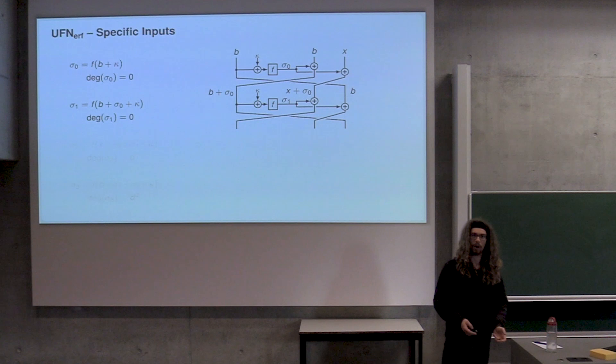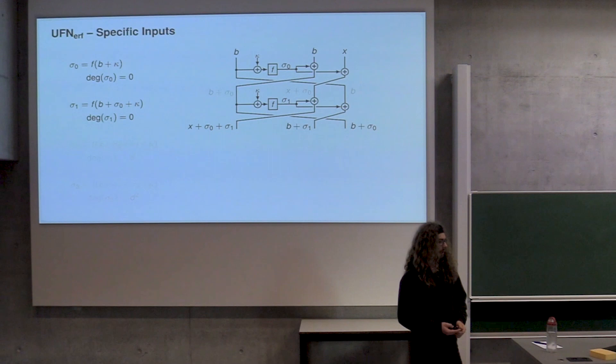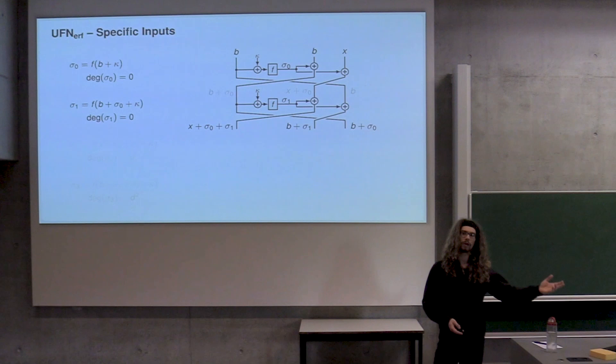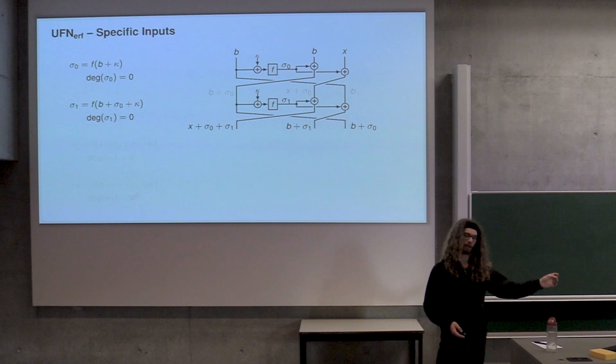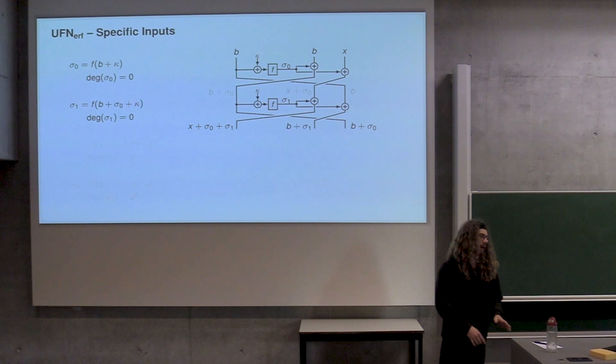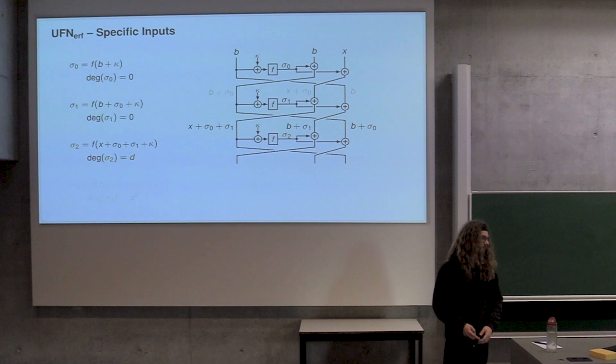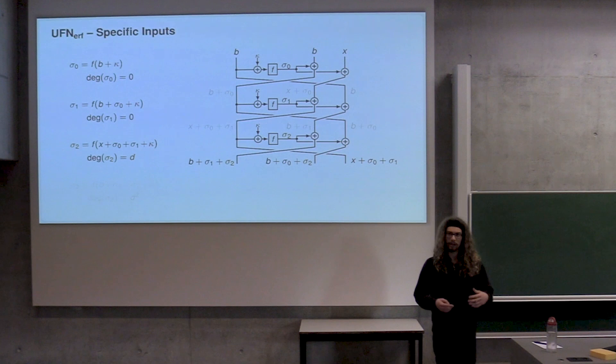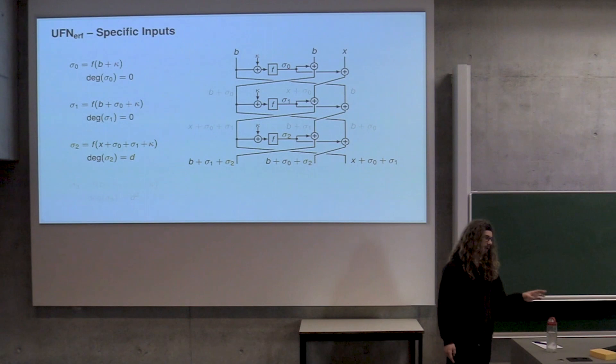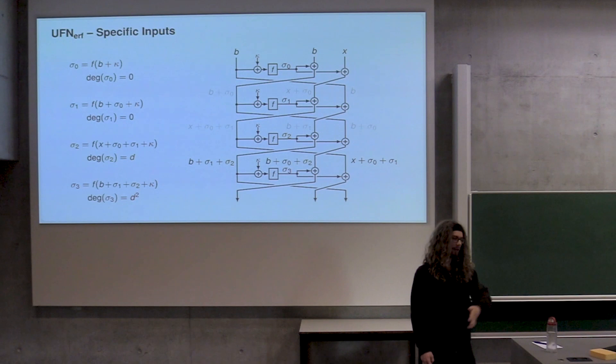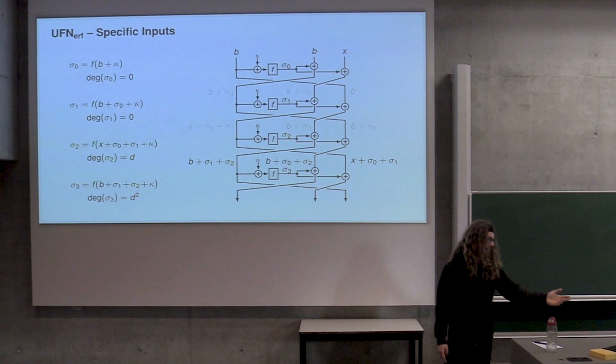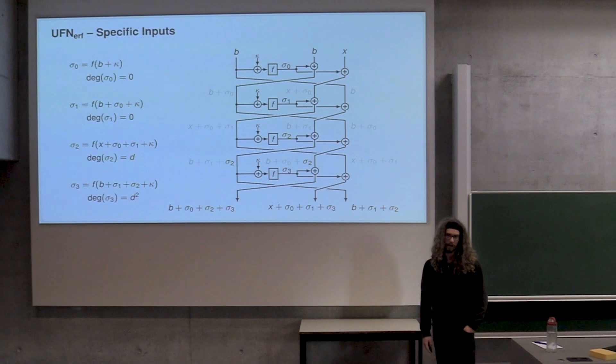The output polynomials after one round look something like this. The input for the second round function is just constants. So sigma one also has degree zero. The output polynomials after two rounds look something like this. This is the reason why we shoved it in the beginning to the rightmost branch - now the leftmost branch holds the variable. Now when we look at what the sigma looks like, it's going to be of degree non-zero. In fact, it's degree D. This is where interpolation starts to become expensive.